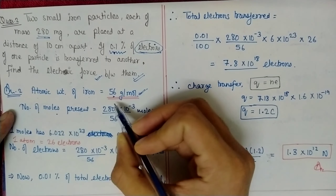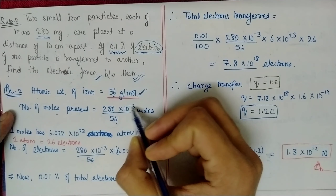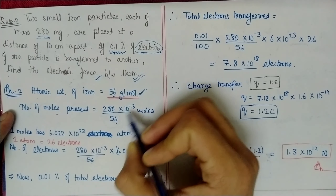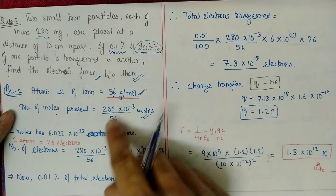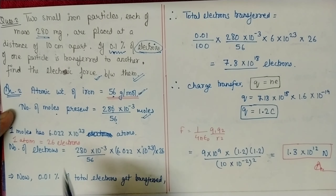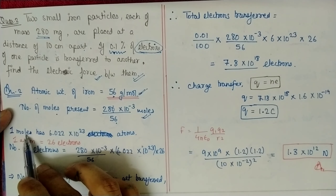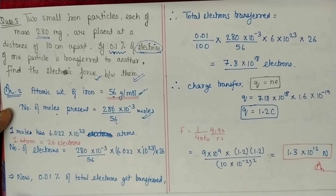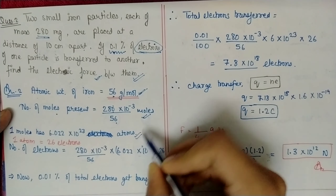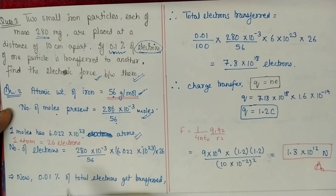The formula for number of moles is given mass / molar mass. Given mass = 280 × 10⁻³ g, divided by 56. We are not simplifying yet to solve in one go. Next, one mole contains 6.022 × 10²³ atoms; for convenience we use 6 × 10²³. Multiplying the number of moles by 6 × 10²³ gives the number of atoms.